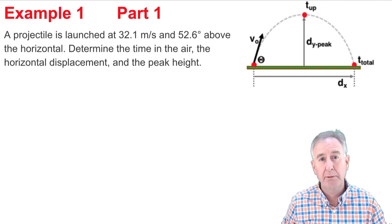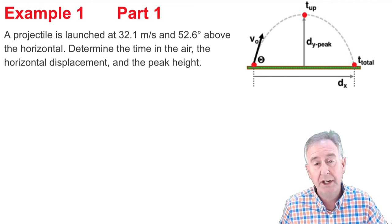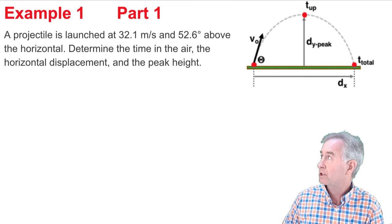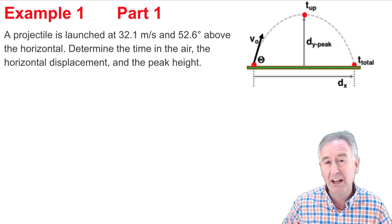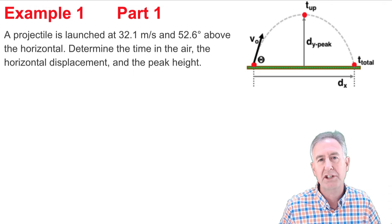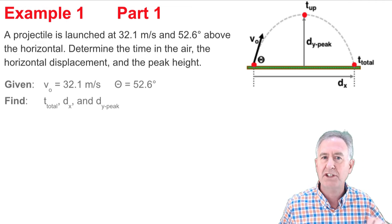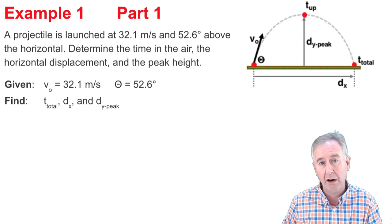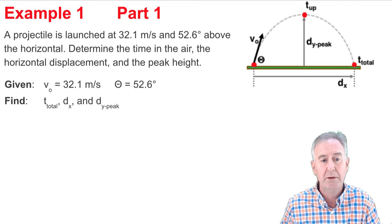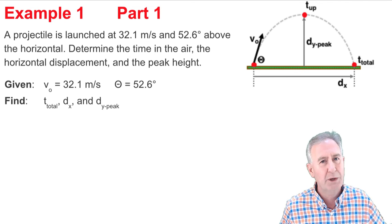So here's our first projectile problem. My first step is I'm going to read it carefully and identify what I know. A projectile is launched at 32.1 meters per second and an angle theta of 52.6 degrees above the horizontal. That's the VO and that's the theta. And what I wish to find is the time in the air, the horizontal displacement, and the peak height. So here I go.